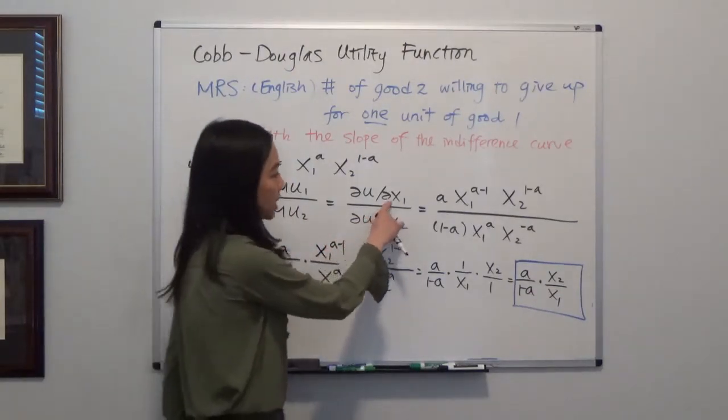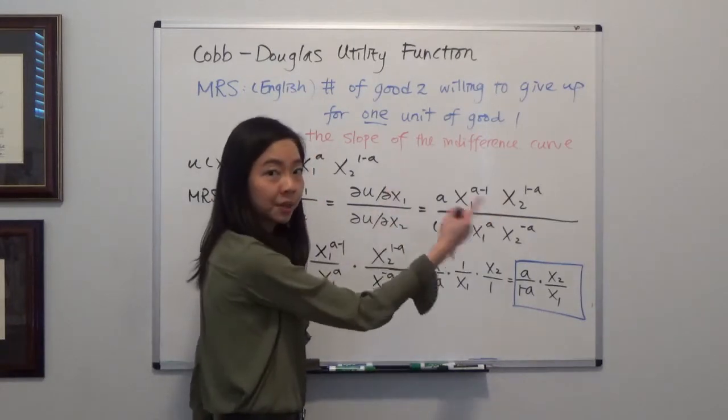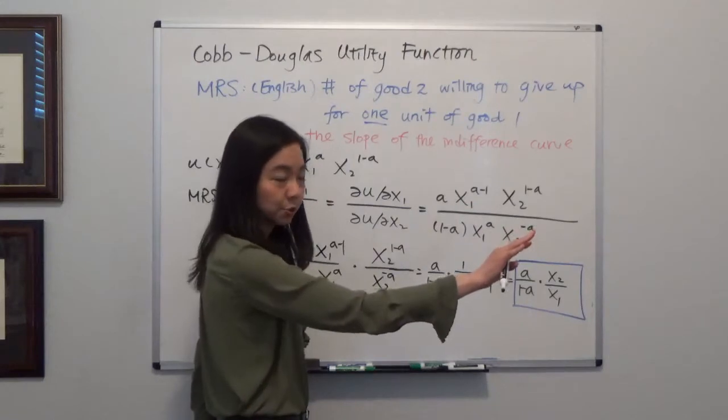So we do that. When we take the partial derivative, you are going to treat the other variable as a constant. So we don't do anything to that.